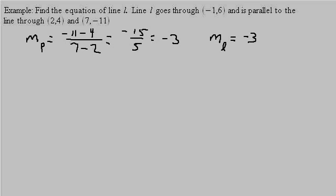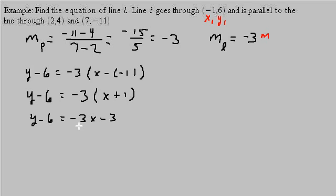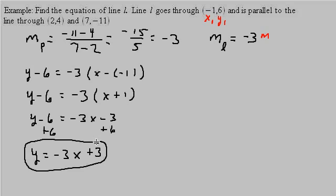So now we have the slope, which is negative 3, and we have x1 and y1. We plug all this into the point-slope formula: y minus y1 equals m times x minus x1. So y minus 6 equals negative 3 times x plus 1, which gives us y minus 6 equals negative 3x minus 3. Add 6, and I get y equals negative 3x plus 3. And there's the equation of the line.